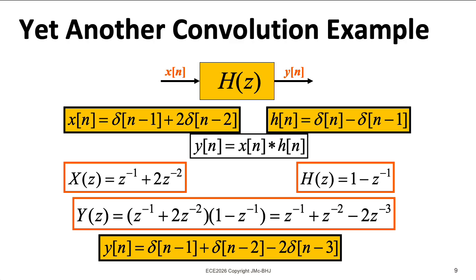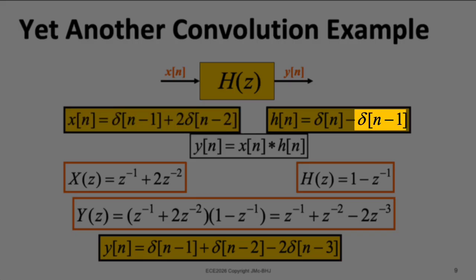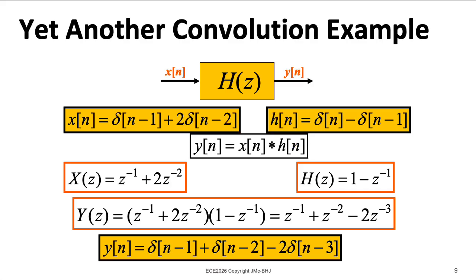Now you could get the same thing by taking this function X of N and convolving it with a delta, which will just give you the same function, and then taking X of N and convolving it with delta N minus 1, which just shifts it to the right by 1, and then doing the algebra on the resulting expressions containing delta functions.